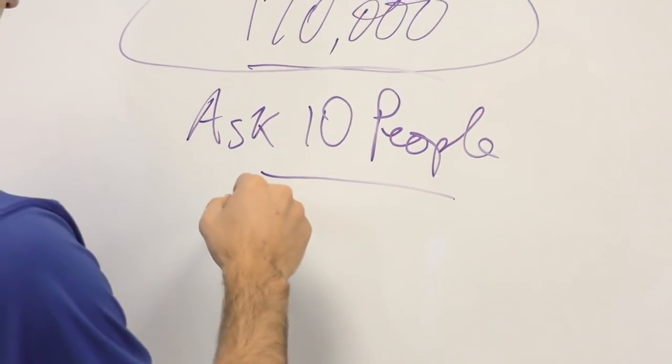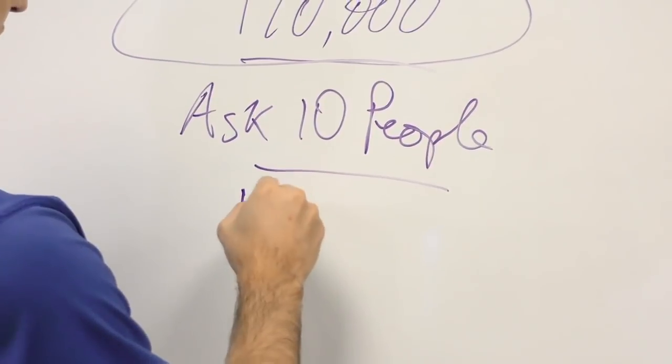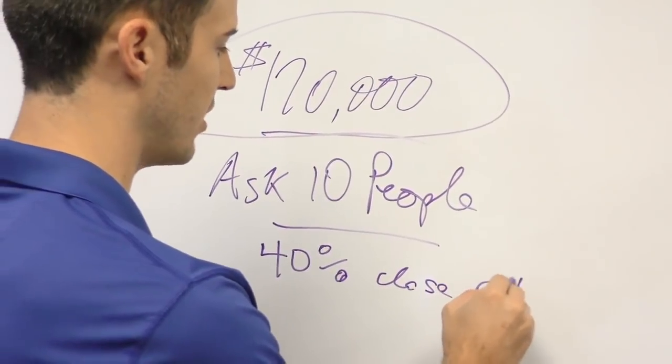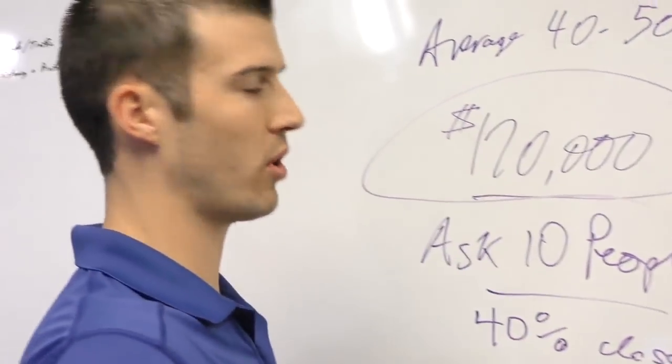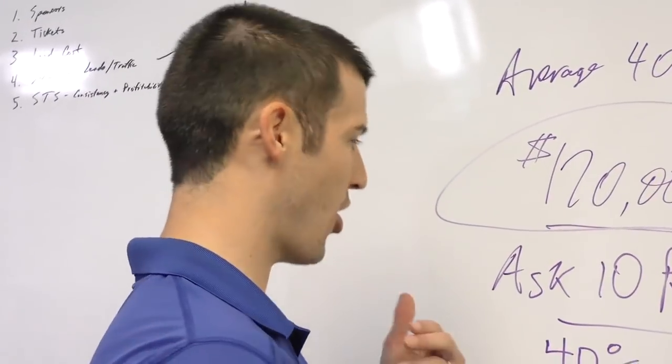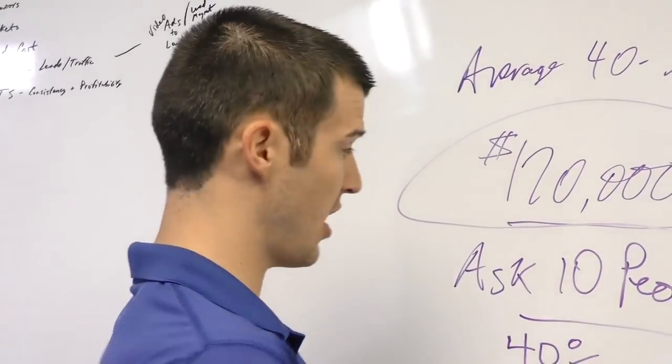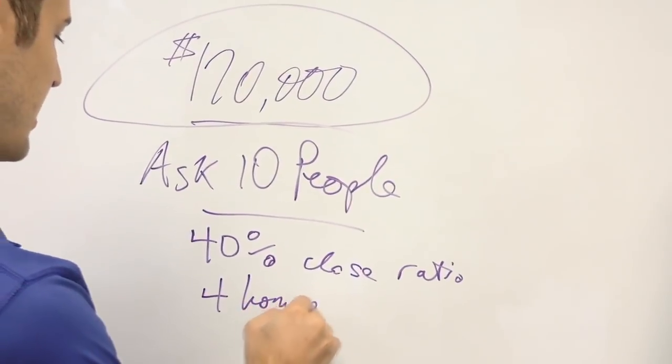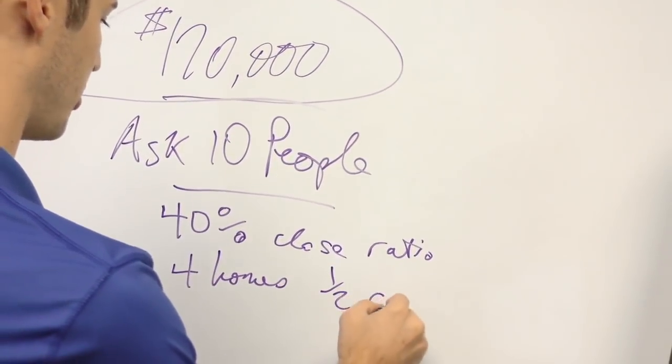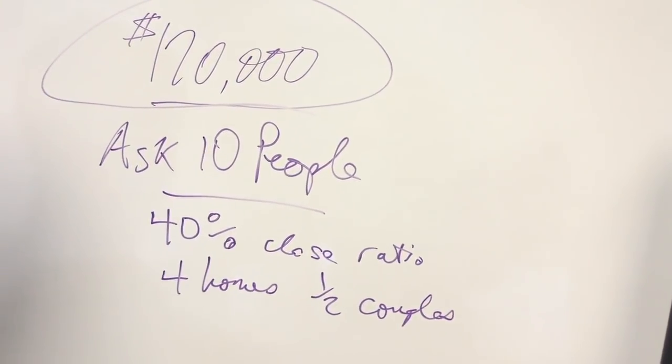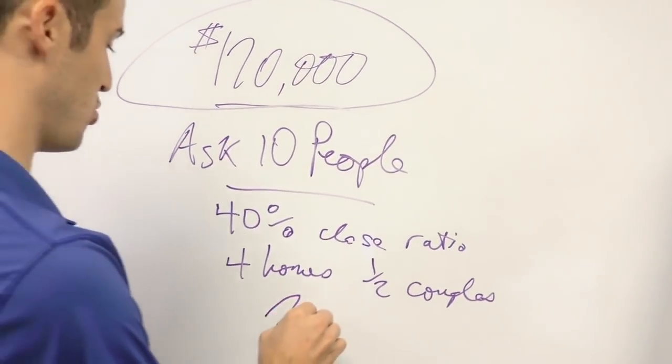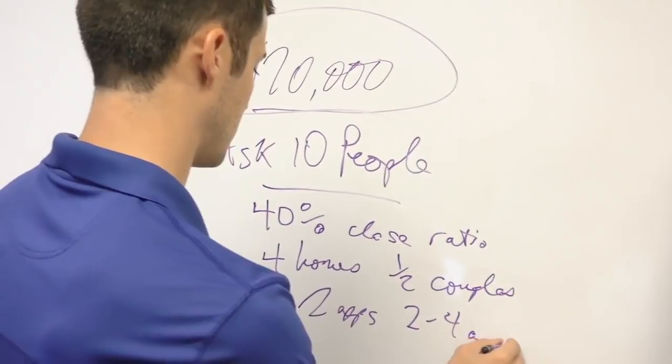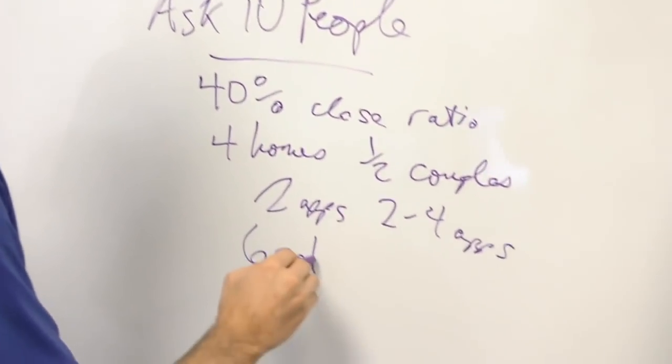Let's just say you ask ten and your closing rate is at forty percent. You could say well Cody that's bad, but you may be working cold leads, door knocking, cold calling. Everybody's different closing ratio will depend on what prospecting method you're using. So I'll be very conservative and say you got a forty percent closing ratio. That's four homes, but let's say half of those homes you sold couples, so you had two homes where you wrote two apps, and the other two you wrote four apps.